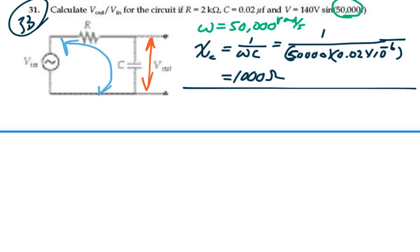Our total impedance for the whole circuit, which would be our input impedance, is equal to our resistance squared plus our total reactance squared. We only have our reactance due to the capacitive reactance, so this is going to equal 2,000 ohms squared plus